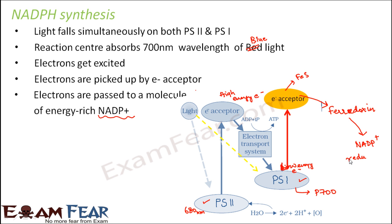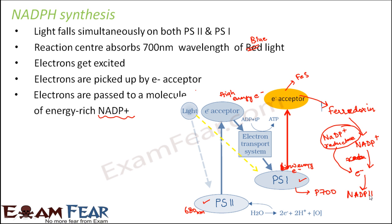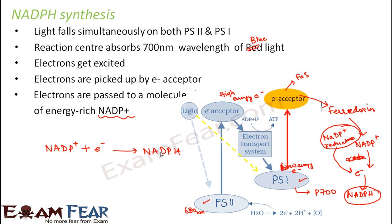When the electron reaches this molecule, there is an enzyme called NADP+ reductase. As soon as the electron reaches NADP+, NADP reductase activates and donates the electron to NADP+. As a result, NADPH is formed. This NADPH is released into the stroma and is utilized for the dark reaction. So NADP+ accepts the electron and forms NADPH — this is how the synthesis of NADPH takes place.